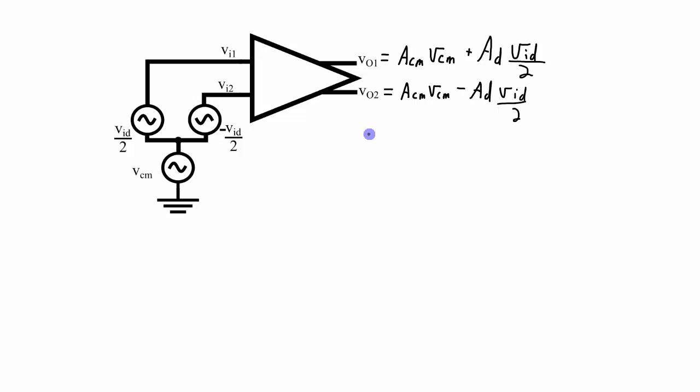And in that case, the Vout differential, that's going to be Vout 1 minus Vout 2. And what we will get is these two terms will cancel out, this term subtracting this term will simply make the output AD times the input differential voltage.